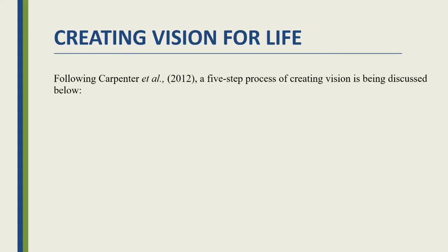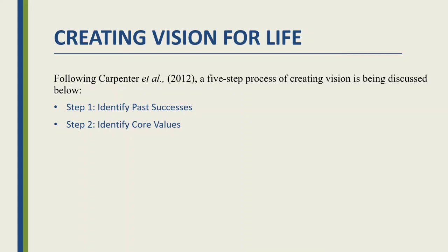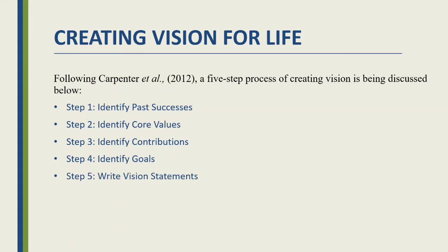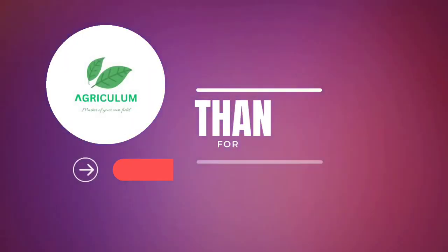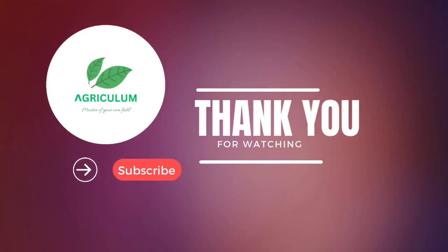For creating a vision for life, there are five steps. Step one: identify your past successes. Step two: identify your core values. Step three: identify your contributions. Step four: identify your goals. Step five: write vision statements. By completing all these steps, you can create a vision for your life. That's all for today's lecture — like, comment, share and subscribe for more updates. Stay connected.